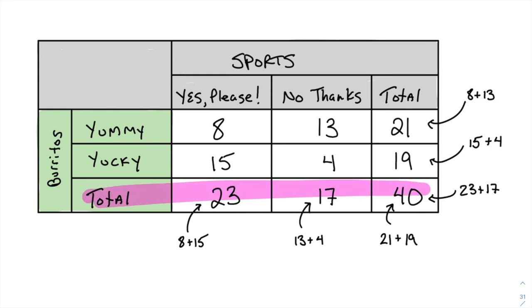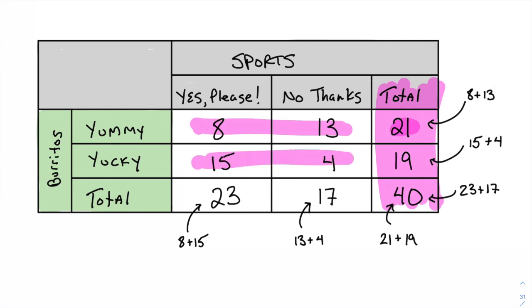In this one, we added a total row. I just take 8 and 15 to get 23, 13 and 14 to get 17, and so on. We also added a total column: 8 plus 13 makes 21, 15 plus 4 makes 19. Having totals on the bottom and side helps us out.